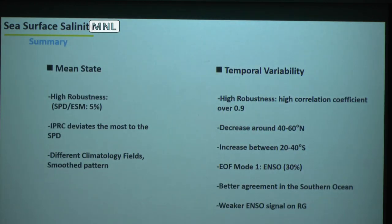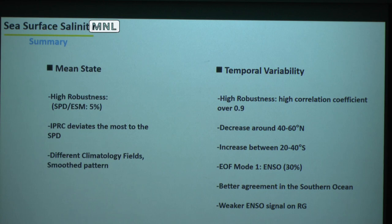A little summary for the sea surface: for the mean state it's doing great, the spread is measurable but not big. The IPRC pattern is different probably due to their mapping method. For the variability, it's also doing great — we have a robust decrease around 40 to 60 north, an increase between 20 to 40 south. The first mode is ENSO, explaining around 30%. We have better agreement in the Southern Ocean, and a weaker ENSO signal on RG.